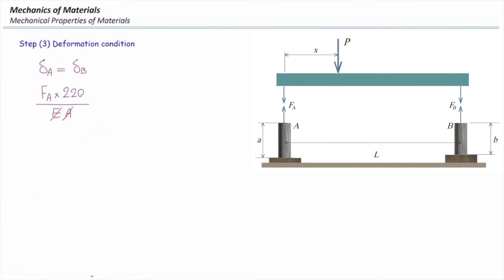Let's plug the values that we got in the previous step. F_A times 220 divided by EA should be equal to F_B times 210 divided by EA. EA cancels from both sides, and I get F_A equal to 210 divided by 220 times F_B.